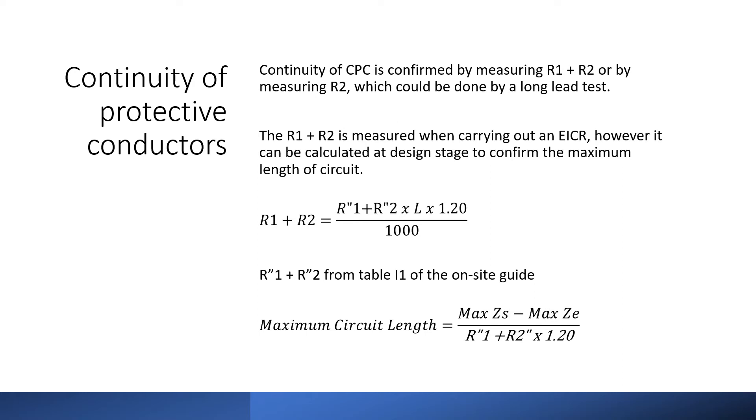Later in this video I will talk about calculating Zs which I'm sure you know is done by measuring R1 plus R2 and adding the measured values for Ze. However while we're talking about R1 plus R2 I think it's important to note that while we can calculate the Zs from the measured values for R1 and R2 the opposite is not true and it's not possible to accurately calculate the R1 plus R2 from the measured Zs.